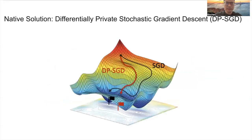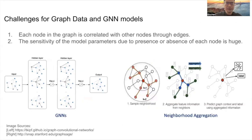One well-known method for achieving differential privacy for neural network models is by using differentially-private stochastic gradient descent. DPSGD adds noise to the gradient in each iteration of the model training process to get trained model parameters that satisfy the DP guarantee. However, DPSGD does not work well for GNN models that process graph data.